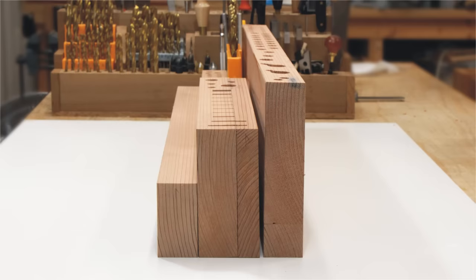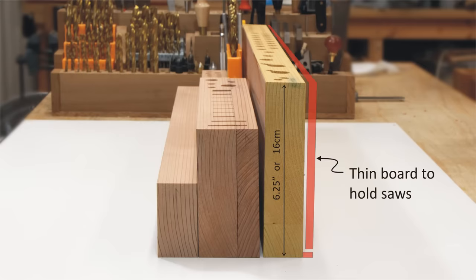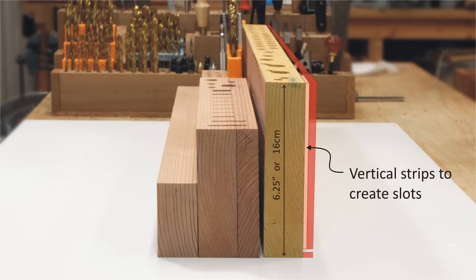I built this latest version from redwood, but any relatively light softwood will work. The backbone of the fixture is a piece 6.25 inches or 16 centimeters tall. I had to glue up two pieces to get that dimension. At the back of this, I glued a thin panel, separated from the backbone by narrow strips, to create slots to house my saws and rulers. Below the panel is a strip of wood that forms a bottom for the slots.